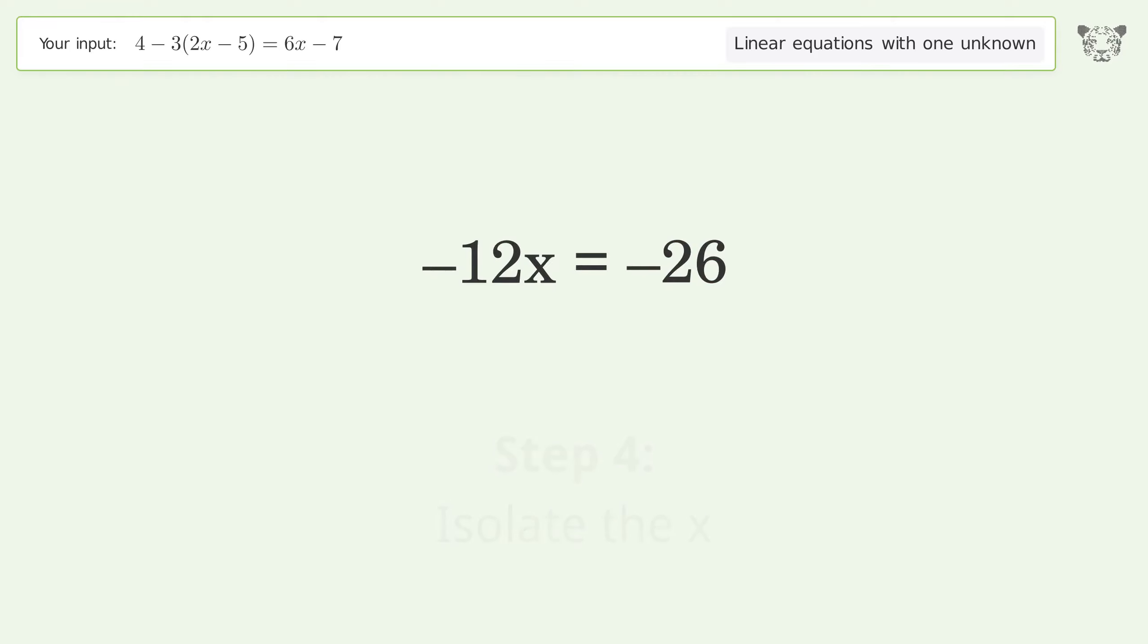Isolate the x. Divide both sides by negative 12. Cancel out the negatives. Simplify the fraction. Cancel out the negatives.